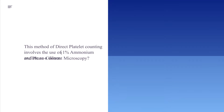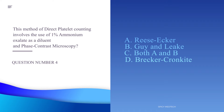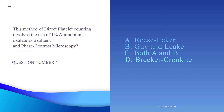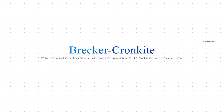Number four: This method of direct platelet counting involves the use of 1% ammonium oxalate as a diluent and phase contrast microscopy. A. Rees-Ecker, B. Guy and Leake, C. Both A and B, or D. Brecher-Cronkite. The answer is letter D, Brecher-Cronkite method. The Rees-Ecker method uses sodium citrate and light microscopy. Guy and Leake uses sodium oxalate as well as light microscopy for platelet counting.